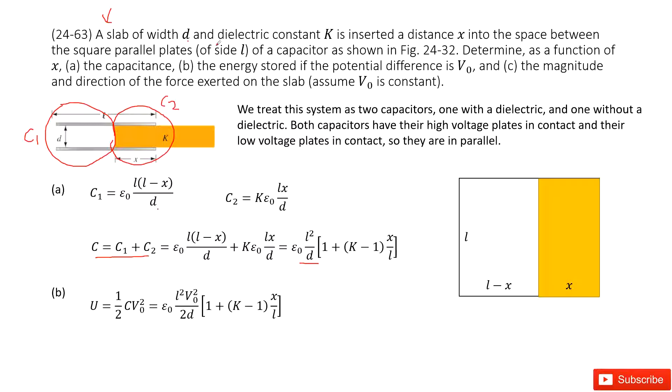The second one asks you to find the energy stored if the potential difference is V0. Now you can see V0 is given, asks you to find the energy U. So very straightforward, you use the function one-half C V0 squared. And this C is just the equivalent capacitance for this system. Input C inside, you get the function there.